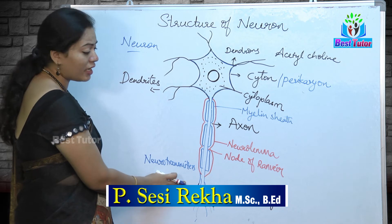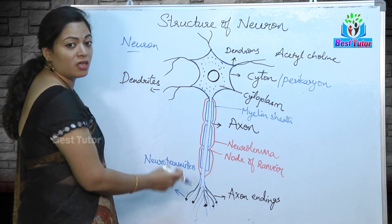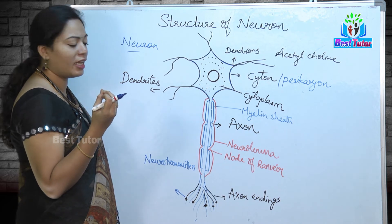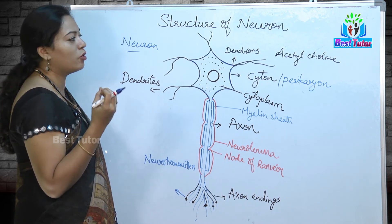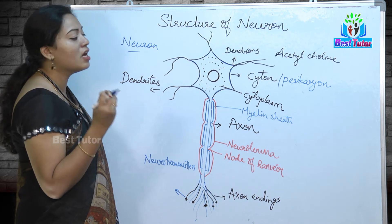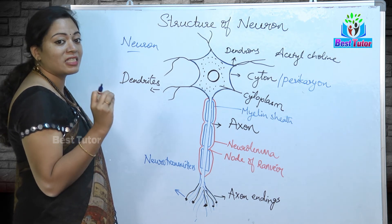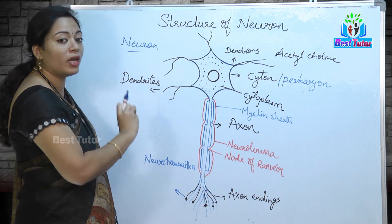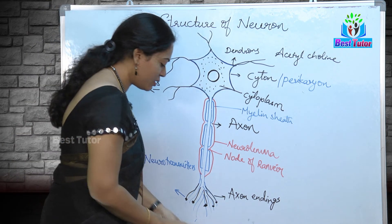At the axon endings, we have expanded bulb-like structures which contain neurotransmitters — chemical substances which help in transmitting the impulse from one neuron to another.